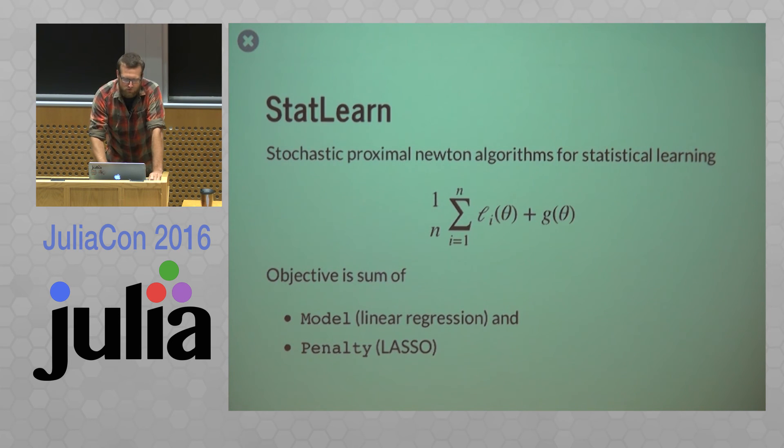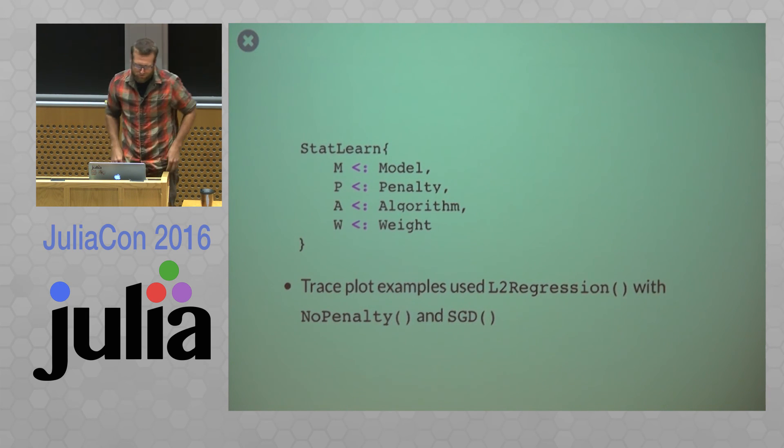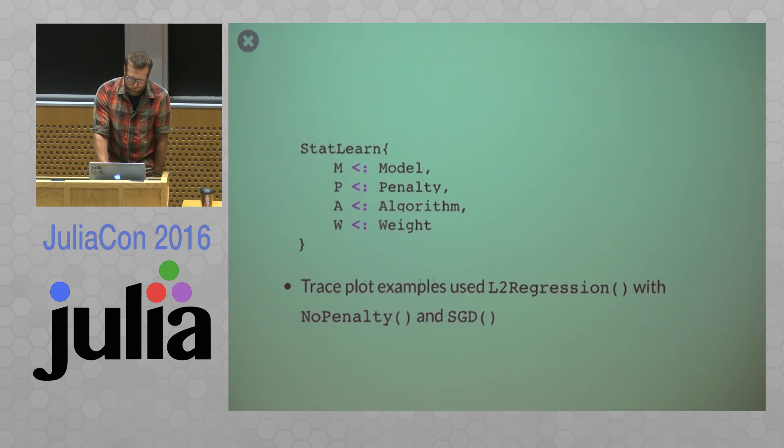And so these algorithms are implemented with a type I'm calling StatLearn for statistical learning. So again, our offline objective function will look something like this. So our objective is a sum of some model, which is an abstract type, say linear regression, and a penalty, say something like lasso. So StatLearn is parameterized by that model and penalty, and then also the algorithm and the weight, which we've already discussed.